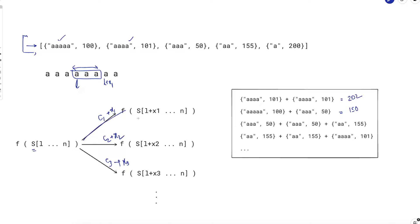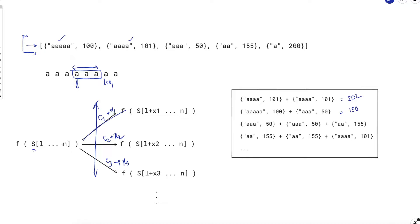Take the minimum across all these alternatives — that's your answer for f(l), the minimum cost to make the string starting at index l and ending at n. Notice we don't need two endpoints since the end is always n. The function can simply take one input: the starting index, assuming we're talking about the entire string from that character to the end.